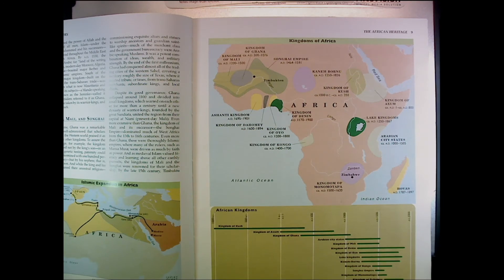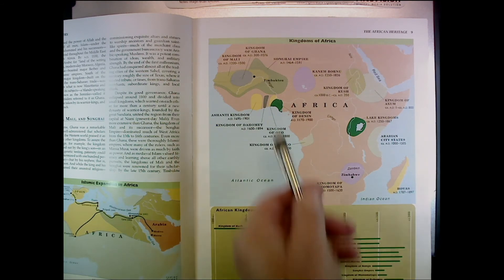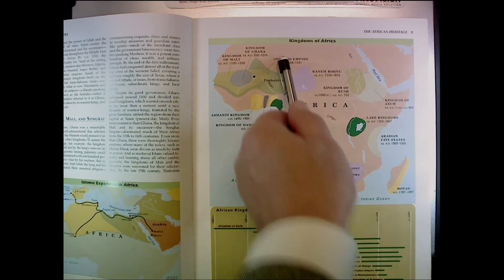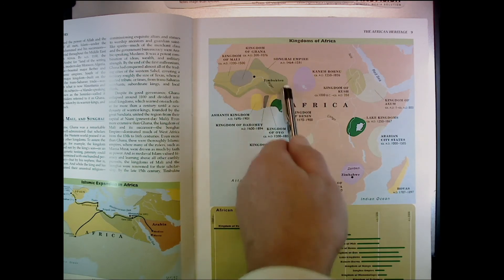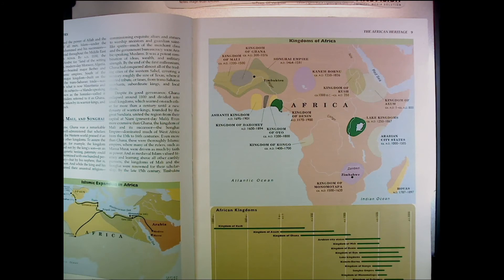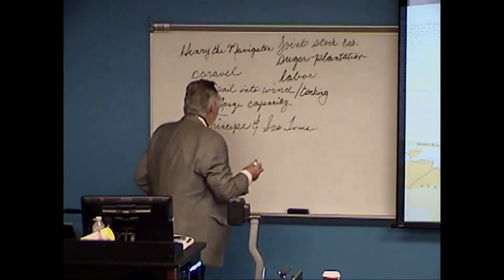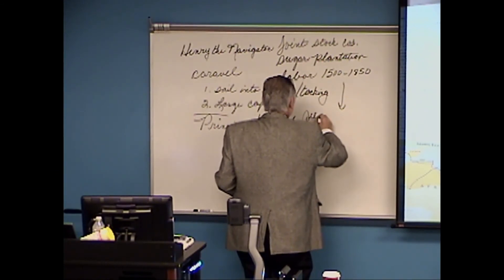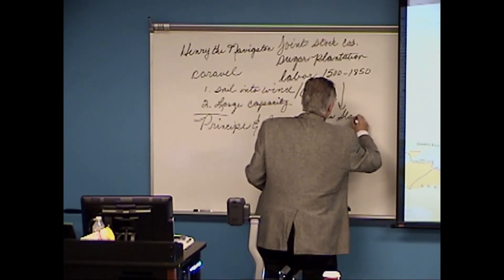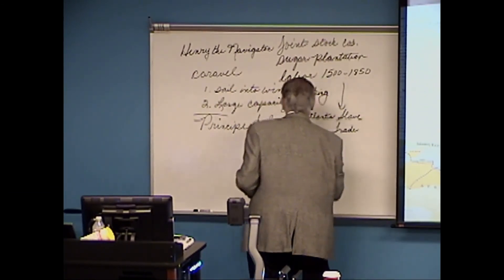The Portuguese needed labor. Negotiations occurred with Songhai, which raided into areas not under its direct control, taking people from the central West African area to the coast, where they were traded for European manufactured goods. The Portuguese were then able to grow sugar and make fabulous profits. The savannah kingdoms were able to hold their own for a while. And this is the beginning of the Atlantic slave trade, from about 1500 to 1850 — lasting about 350 years.